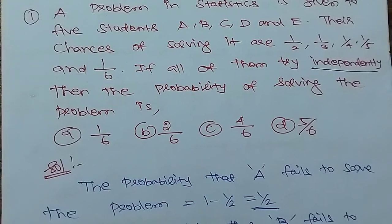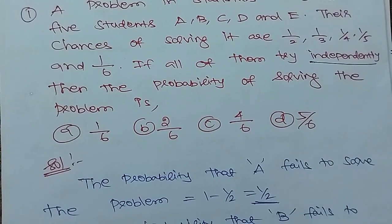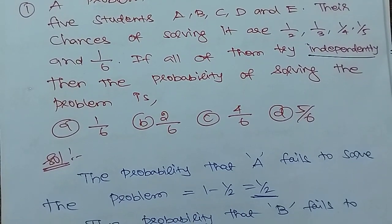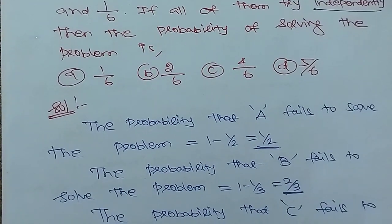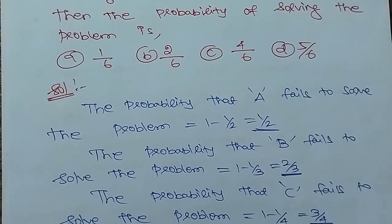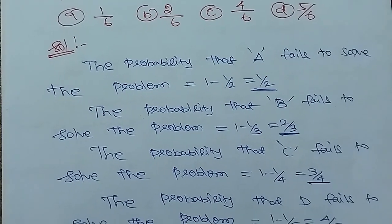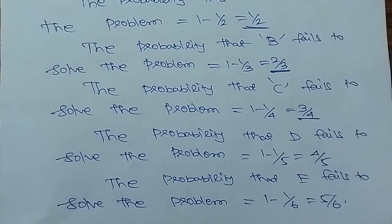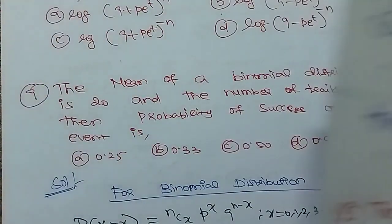Suppose A failed to solve the problem — it is an independent event. 1 minus probability of A = 1 minus 1/2 = 1/2. B fails: 2/3. C fails to solve the problem: 3/4. D fails to solve the problem: 4/5. The probability of E failing: 5/6.